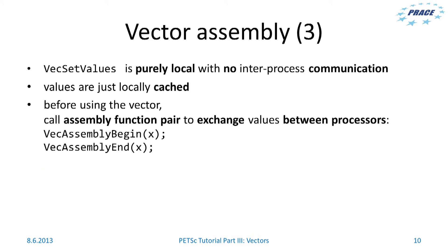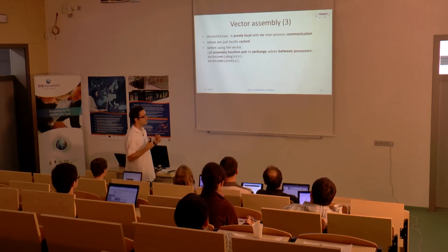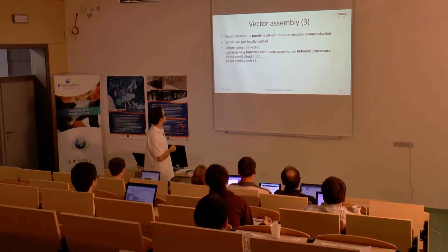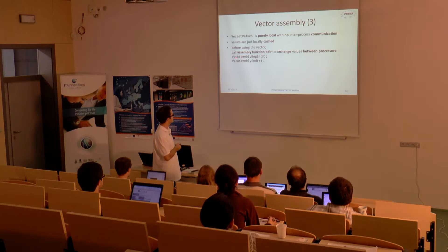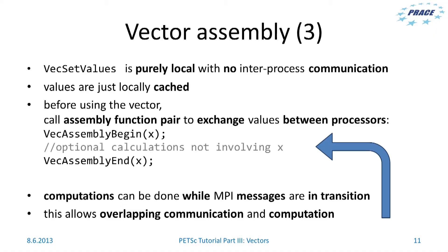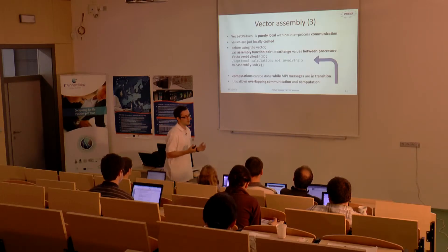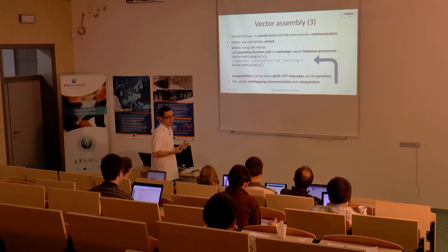VecSetValues is a purely local function with no inter-process communication. It just caches the values, and before using the vector you must call the assembly function pair — VecAssemblyBegin and VecAssemblyEnd — to exchange values between processors. Why? Computations can be done while MPI messages are in transit. You can have optional calculations that do not involve x, allowing overlapping communication and computation so the program can be more efficient.